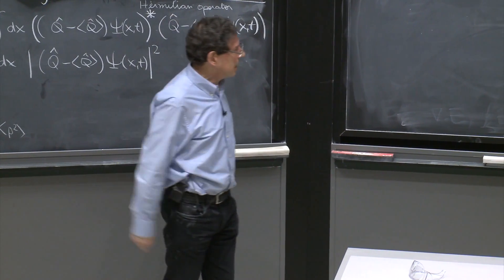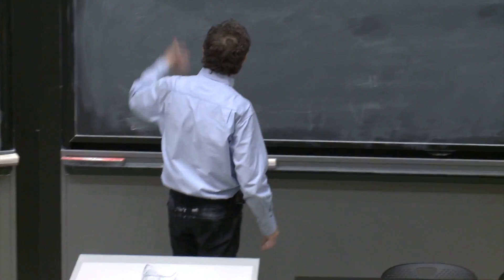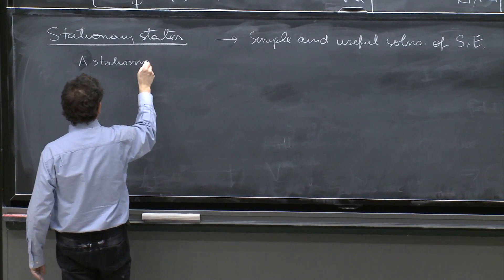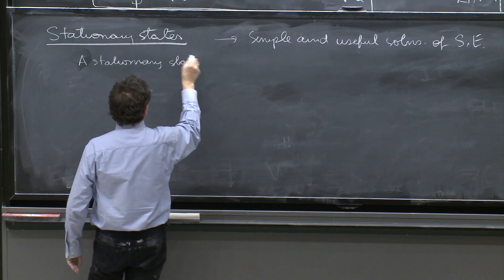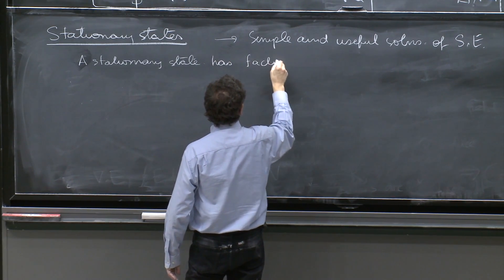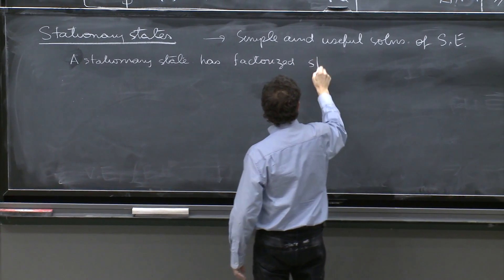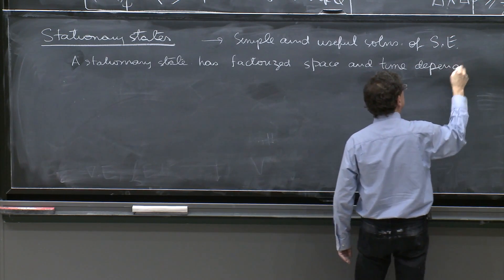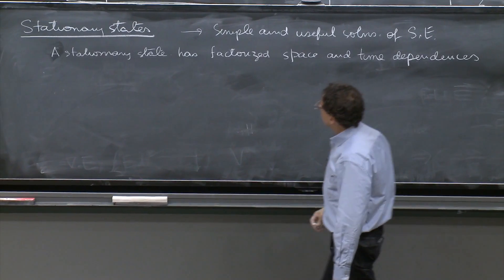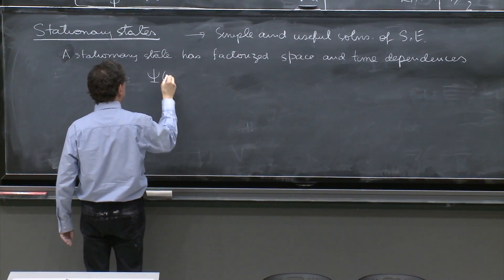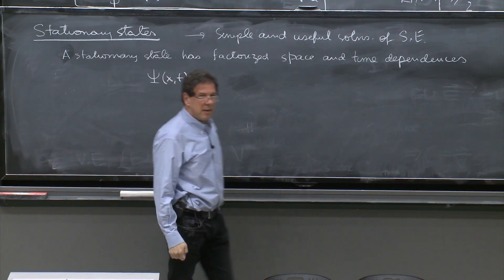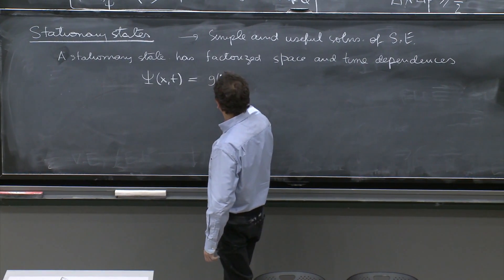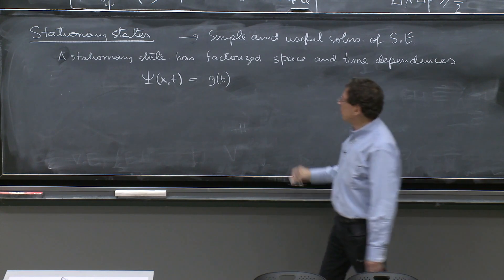It is very simple, as we will see. So the definition of a stationary state has a factorized space and time dependences. So psi of x and t is a stationary state if you can write it as a product of a function of time times a function of position.